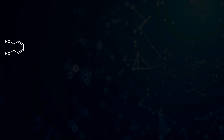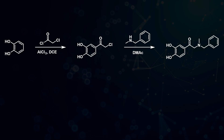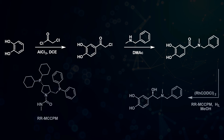The synthesis of epinephrine begins by using catechol in a Friedel-Crafts acylation reaction using chloroacetyl chloride and aluminium trichloride as a Lewis acid. This intermediate is treated with N-methylbenzylamine in a substitution reaction. Next, a stereoselective reduction using a rhodium catalyst, chiral ligand, and hydrogen is used to reduce the ketone to the alcohol with the correct stereochemistry.